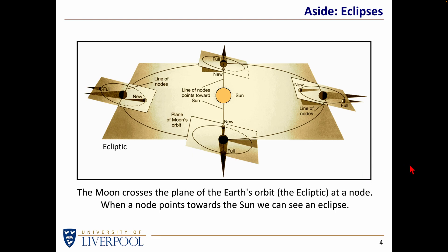So if we want to know when an eclipse happens, we need to know not only when we get a new Moon or full Moon, but also keep track of where these so-called nodes are — the points at which the Moon's orbit crosses the Earth's orbit. If we also keep track of how far the Moon is from the Earth, because the Moon's orbit is an ellipse not a circle, we can calculate whether it's going to be an annular eclipse — where the Moon's disk doesn't fully cover the Sun — or whether it's a total eclipse.